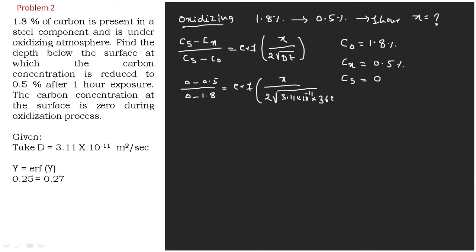One hour is equivalent to 3600 seconds. When you calculate this one, it comes out to be 0.277.